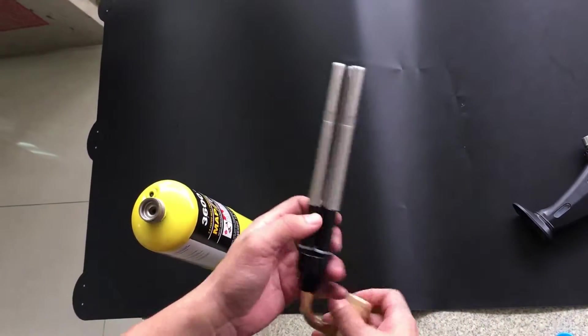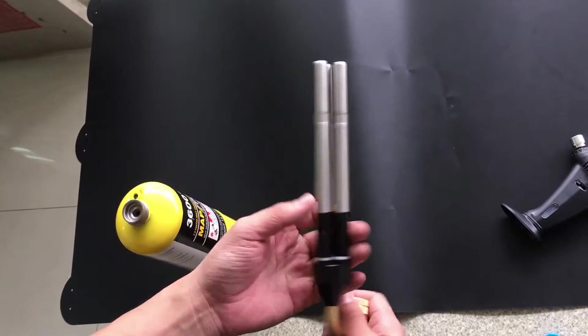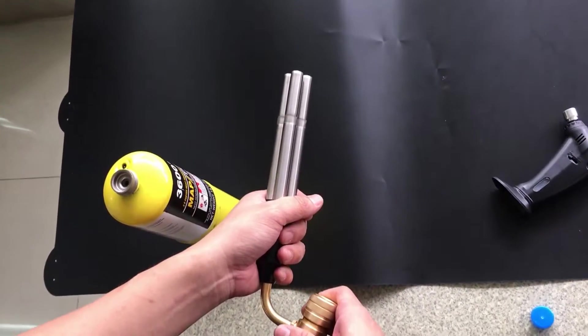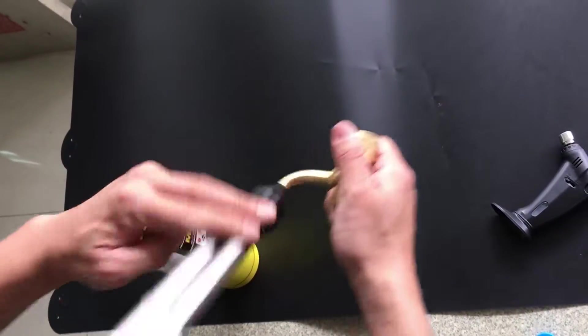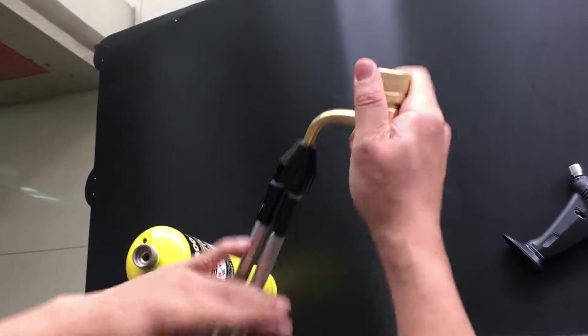It has three tubes, which means it has a big flame and it is for bigger objects. And the second thing is you can turn the tube like this 360 degrees, no problem.